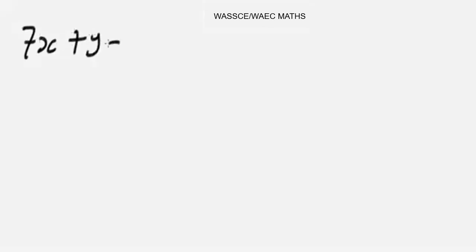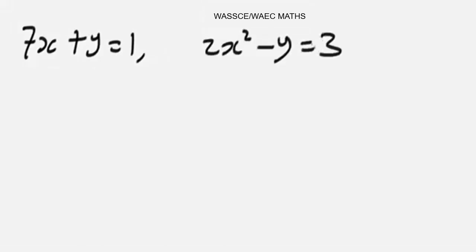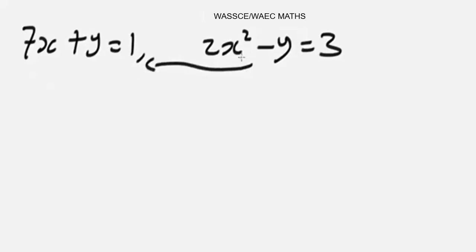We are given two equations: 7x + y = 1, and 2x² - y = 3. We are asked to find the point values of x and y respectively. To solve this simultaneous equation, we need to arrange these equations — we have a linear and a quadratic equation here. We'll rearrange so that the quadratic expression has y on one side and the x² term and constant on the other side.